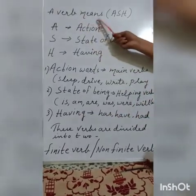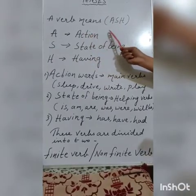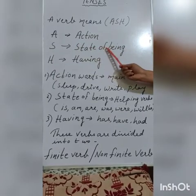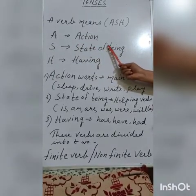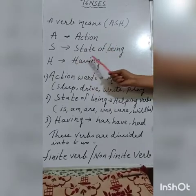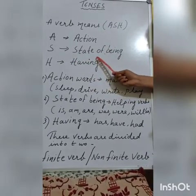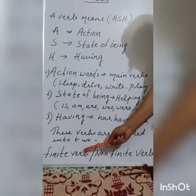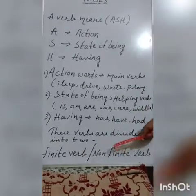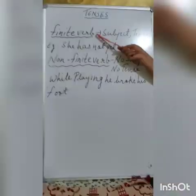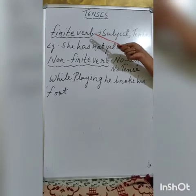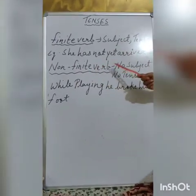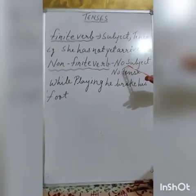So a verb means ASH. A for action — that is action verbs or the main verbs. S stands for state of being — that is helping verbs: is, am, are, was, were, and will be. And H for having — that is has, have, and had. Later on, these verbs are divided into two: finite verb and non-finite verb. A finite verb has a subject and a tense, and non-finite verbs do not have subjects and no tense.